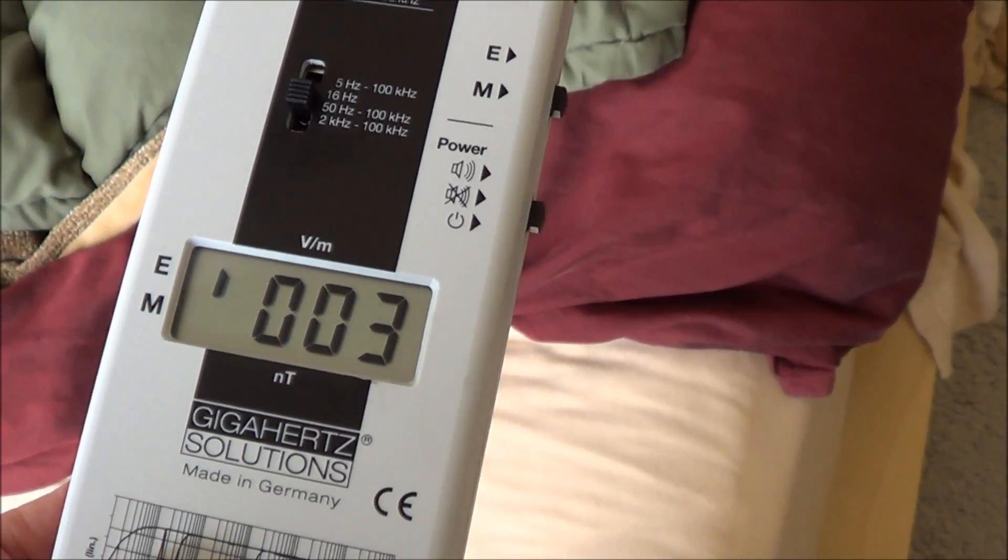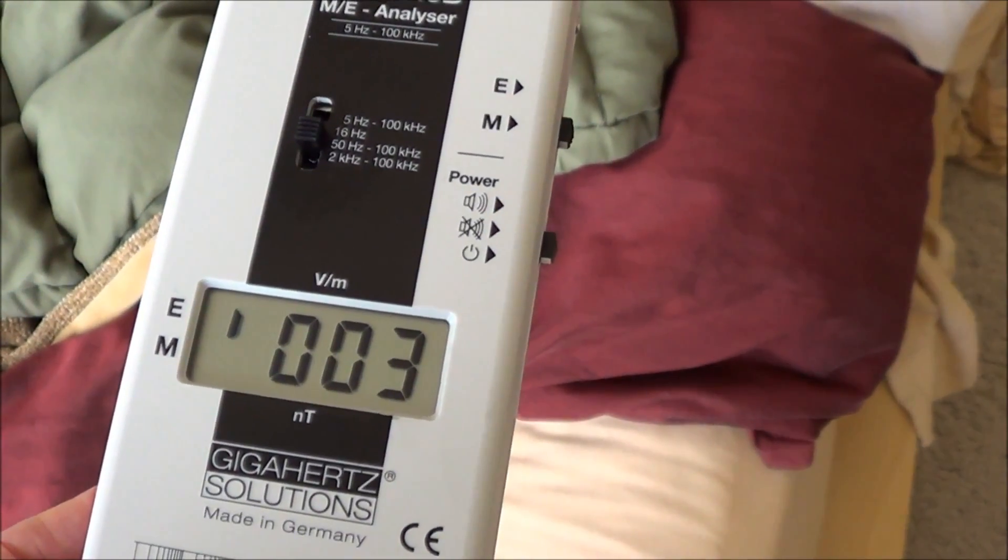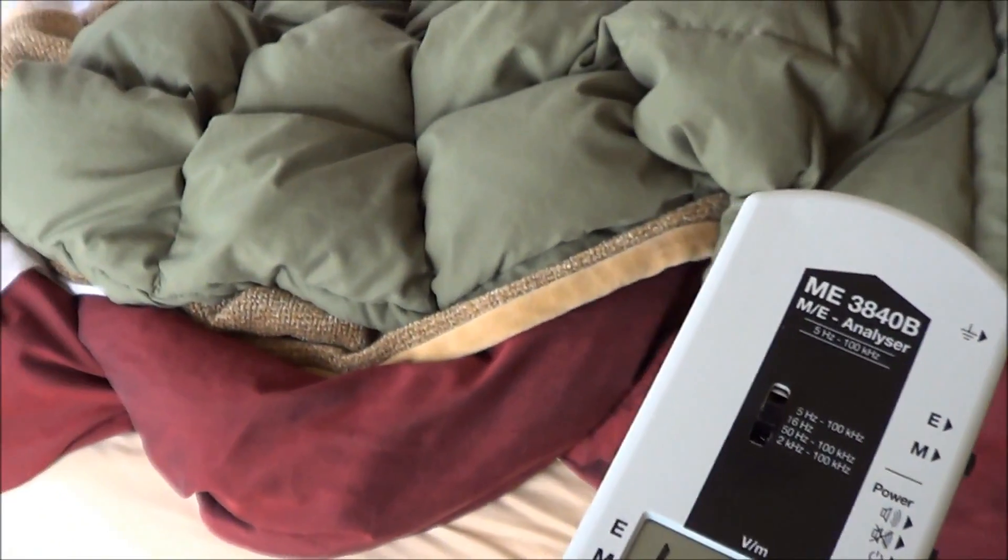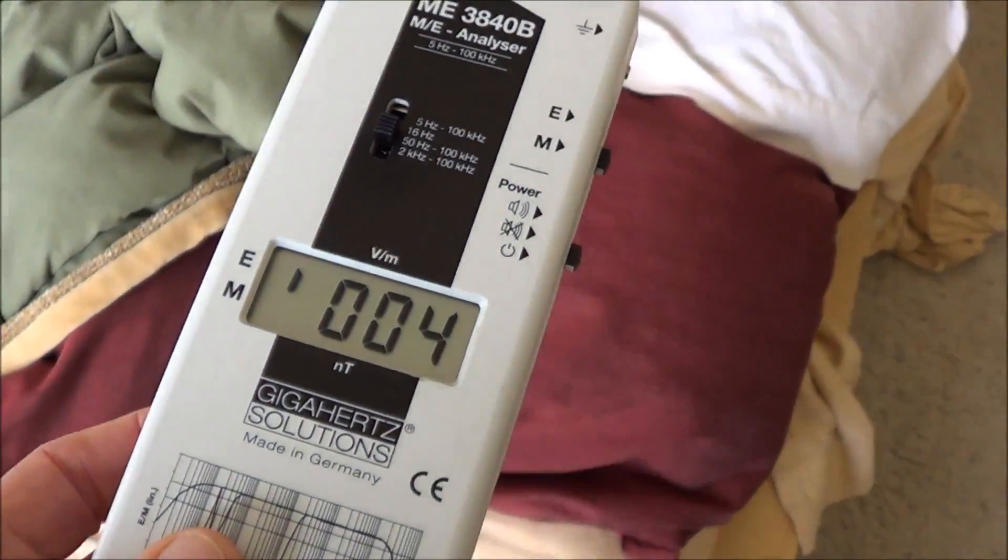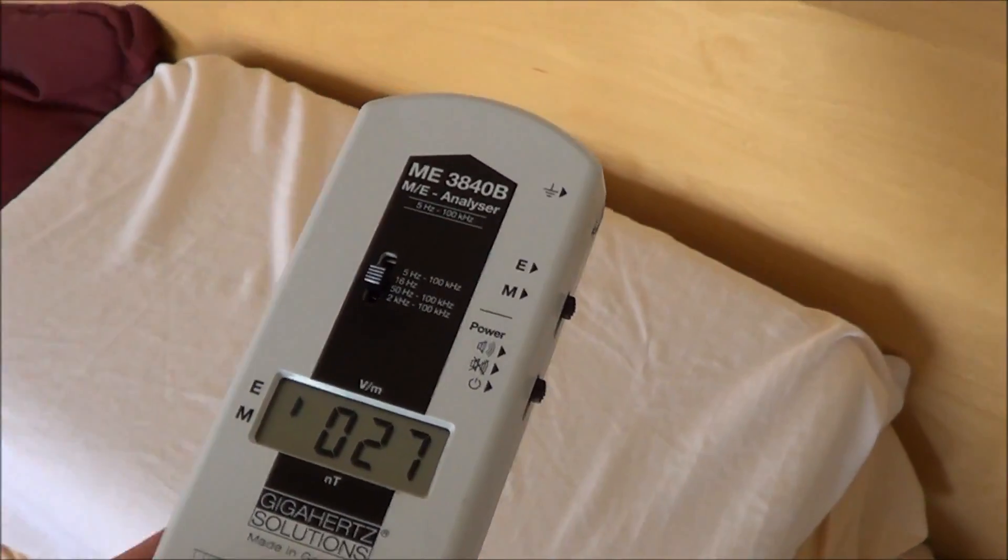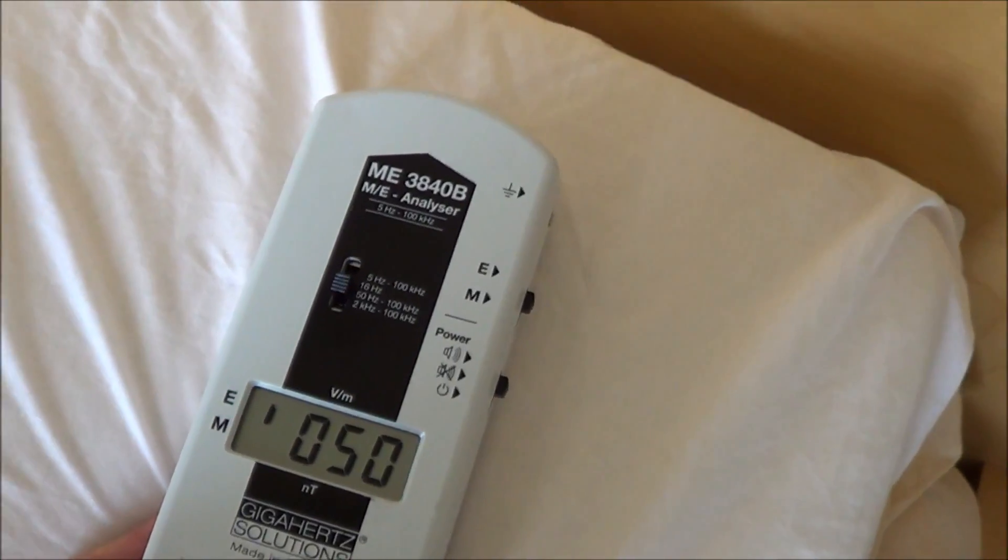So by showing you this, you can make your own decisions about where to place your bed in your room and where to place your head. Once again, sleeping with one's head toward this side of the bed would be a lot smarter than sleeping up here, where immediately we're back up to almost 50 volts per meter.